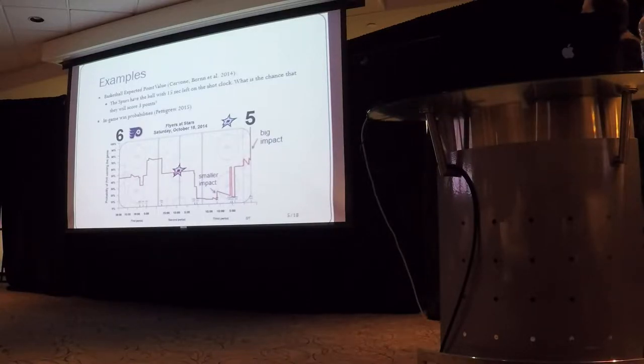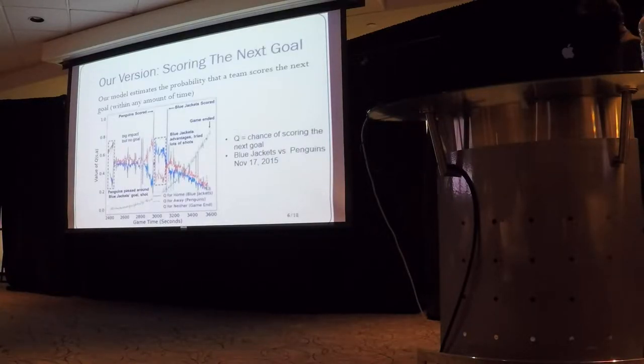So then in a Sloan paper in 2016, we propose, instead of looking at winning, looking at the chance that a team scores the next goal. Not within the next minute, not within the next two, within any amount of time, but are they going to be the next ones to score? And so then we can make a similar chart. So this is actually from a neural net model. And we're just doing this for the third period, Blue Jackets versus Penguins. And you can already see that we get a lot more information in terms of what's happening in the game. It's not just these flat lines.